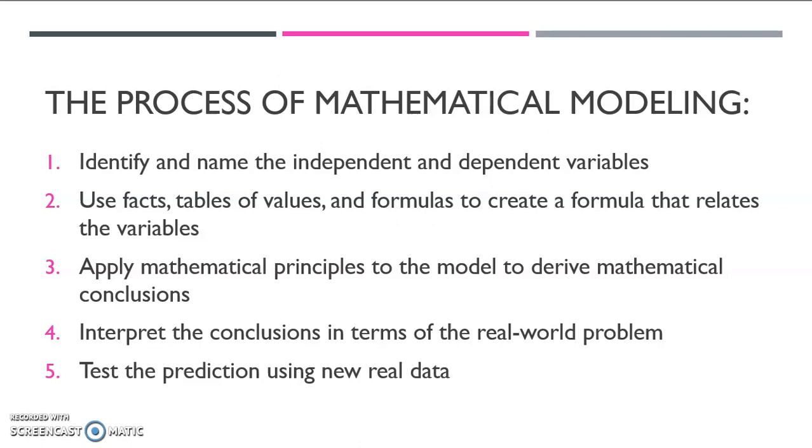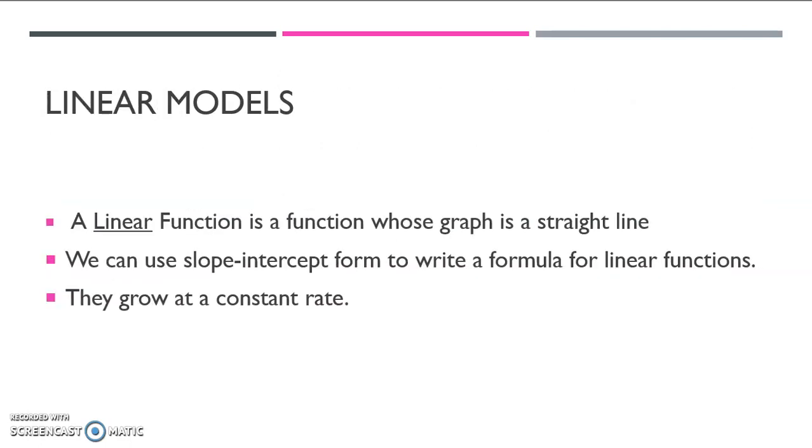We're going to start off by talking about linear models. A linear model is exactly what it sounds like. It's a real world situation that can be modeled by a straight line. A linear function is a function whose graph is a straight line. Most of the time we try to use slope intercept form to write your formula. One thing to remember is that these functions are growing, and we can even say that they're decreasing at a constant rate. If the slope is positive, they're growing. If the slope is negative, they would be decreasing.